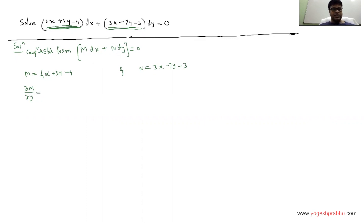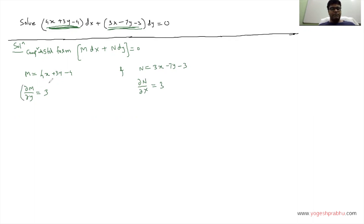Since x is a constant, the 4x term becomes 0. The derivative of 3y is 3, and −4 is constant so it gives 0. Therefore ∂M/∂y = 3. For ∂N/∂x, the derivative of 3x with respect to x is 3, and the remaining terms give 0. So ∂N/∂x = 3.